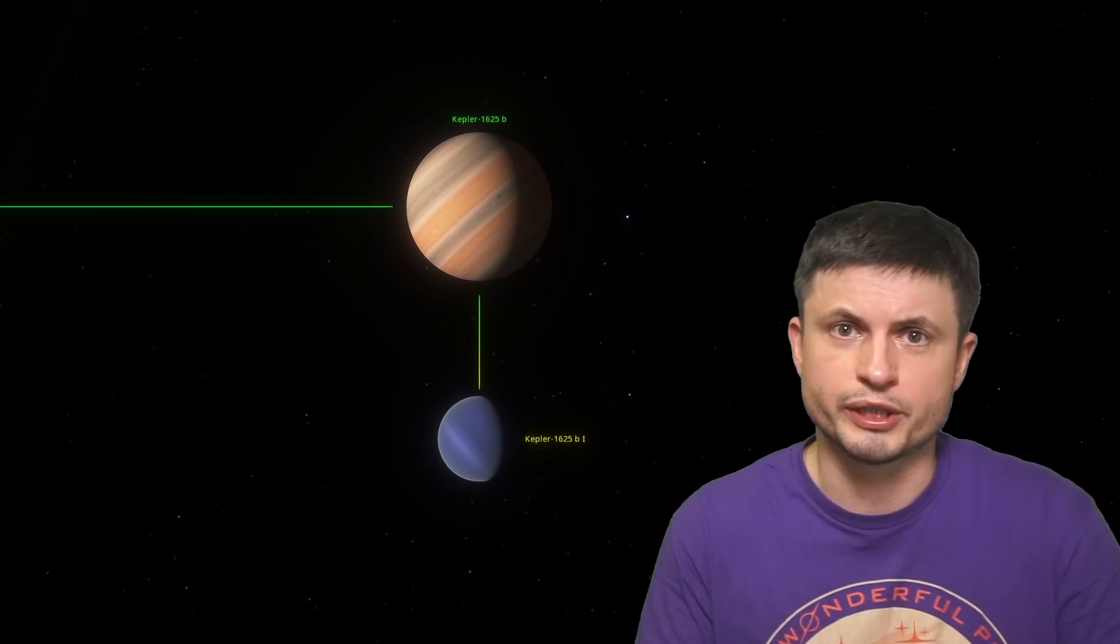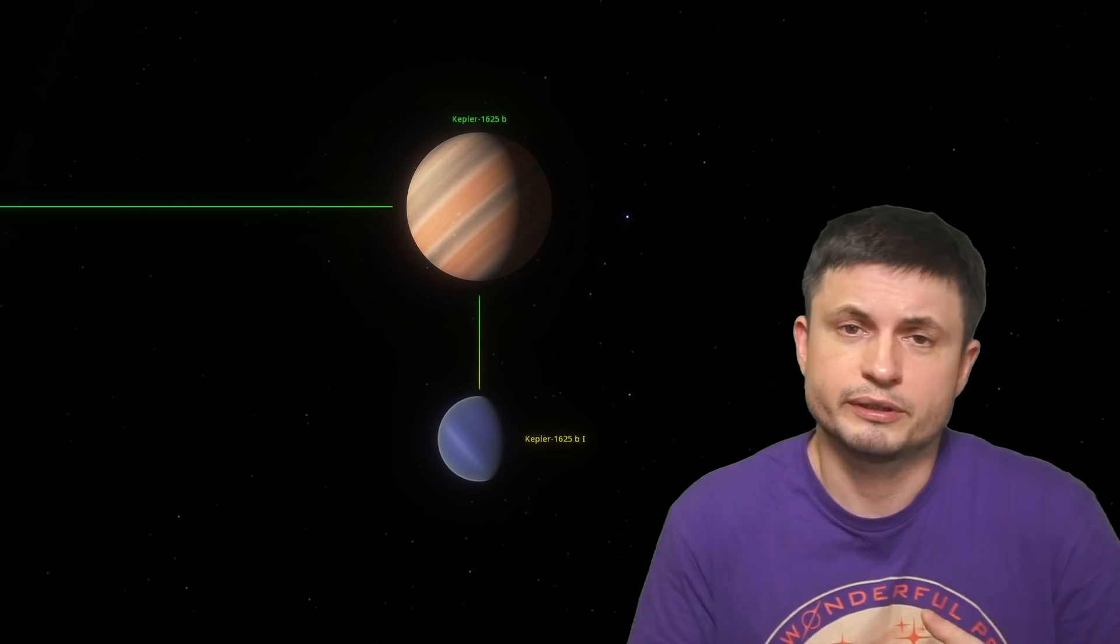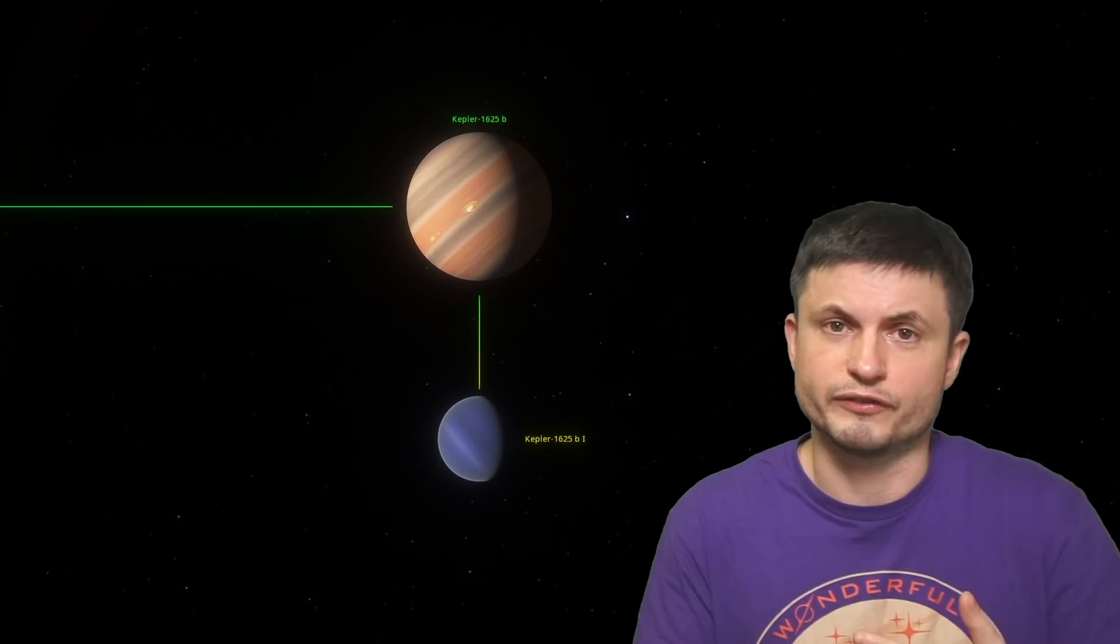But what's more exciting about this type of research and discoveries of these exomoons is the potential of finding these exomoons around, for example, a red dwarf, and maybe even in the habitable zone of the red dwarf.